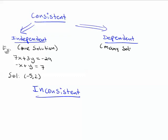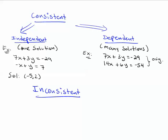Consistent dependent means there are infinitely many solutions. An example is 7x + 3y = -29 and the second equation 14x + 6y = -54. If you try to solve this system using elimination by multiplying the first equation by -2 to cancel x, the new system becomes -14x - 6y + 54 on top.